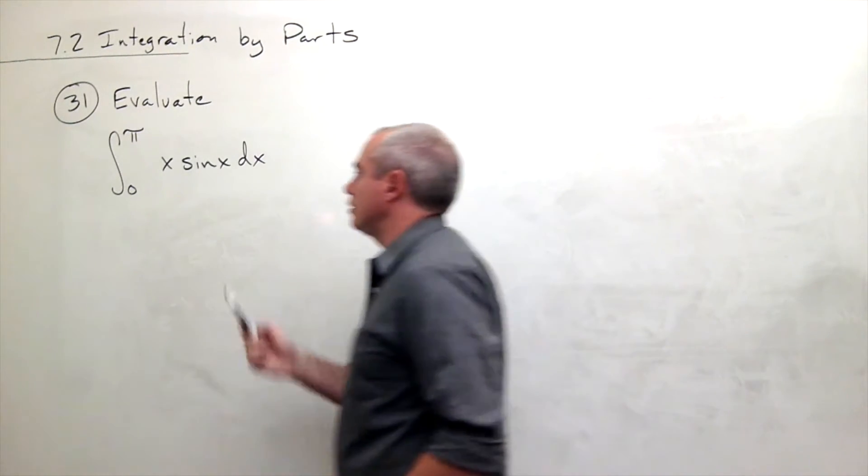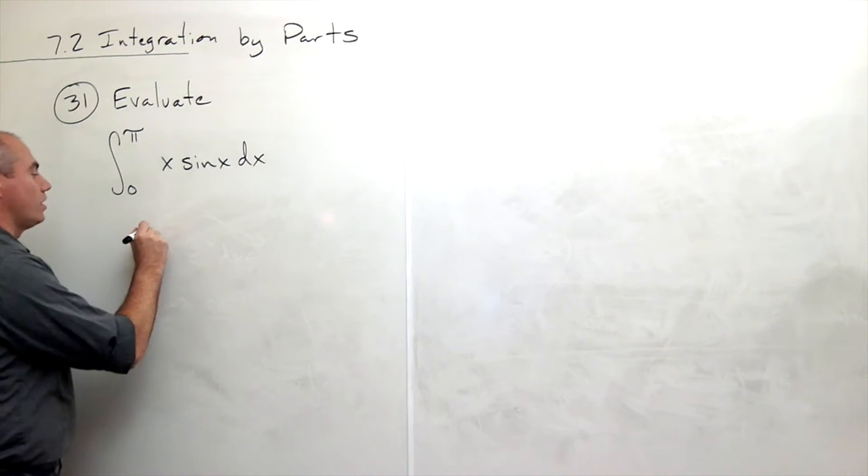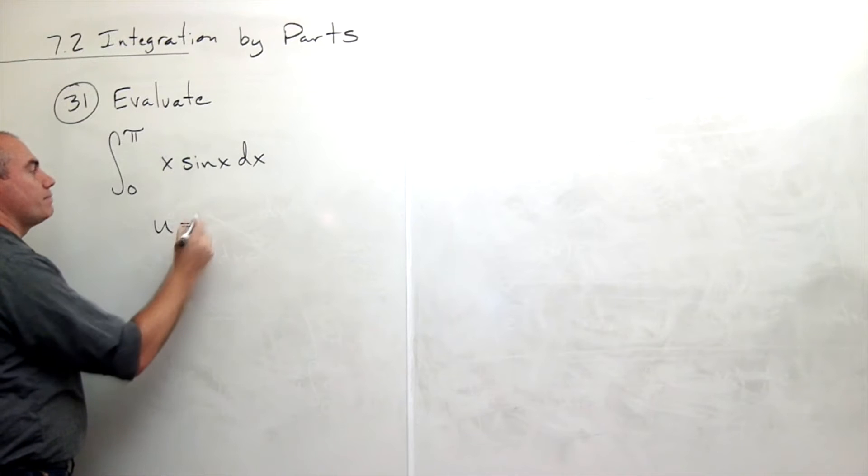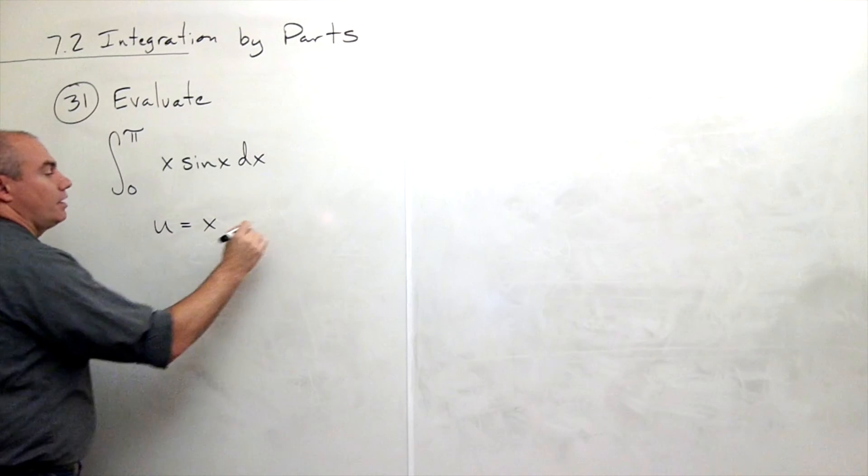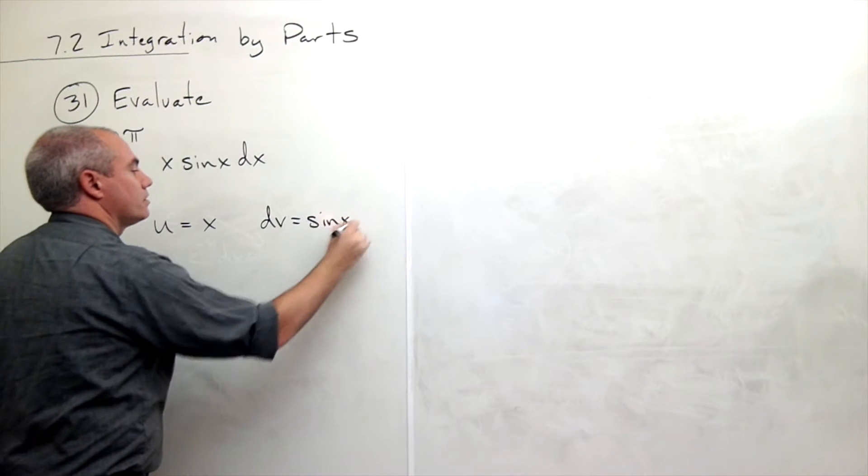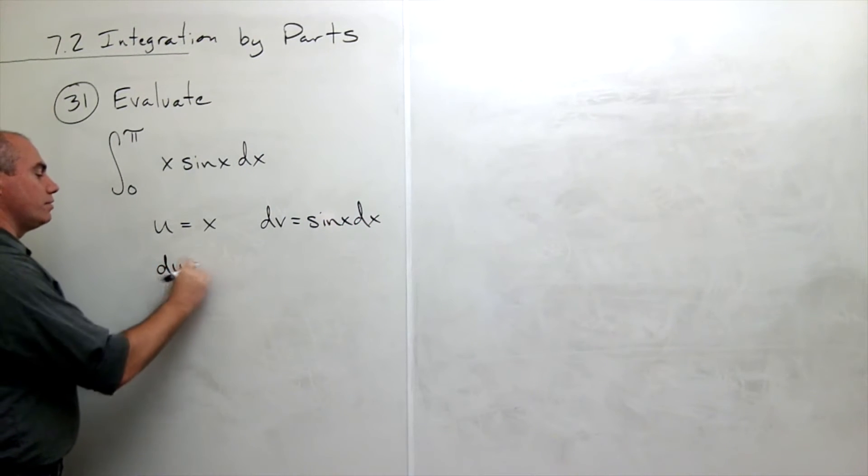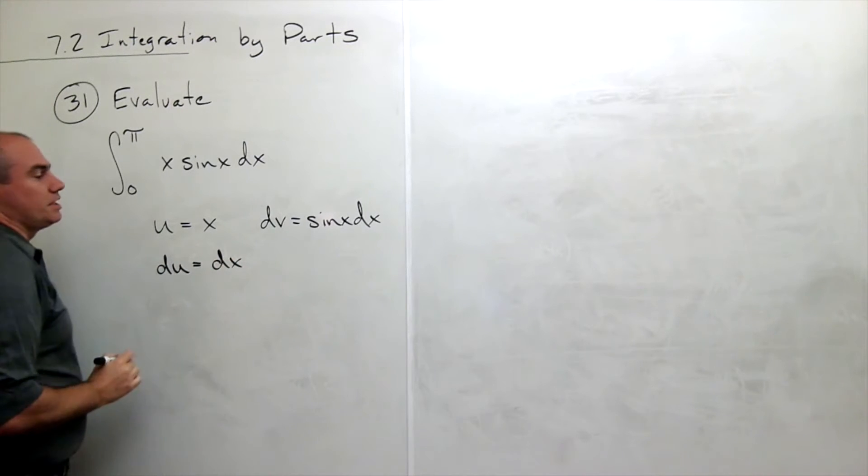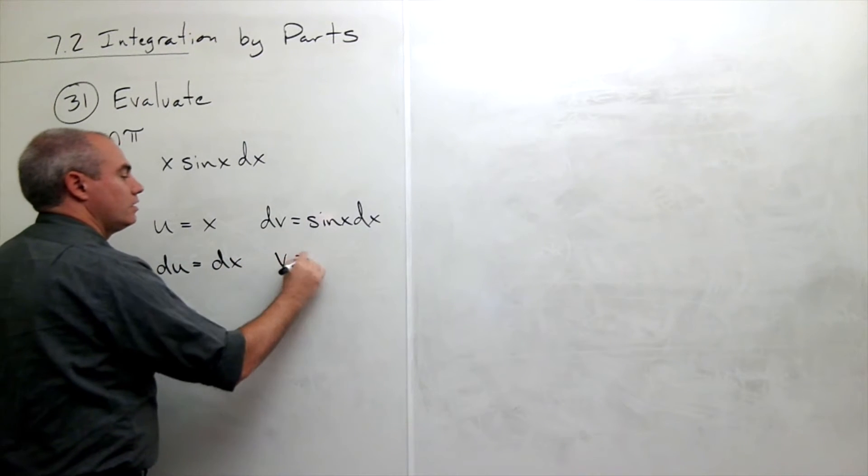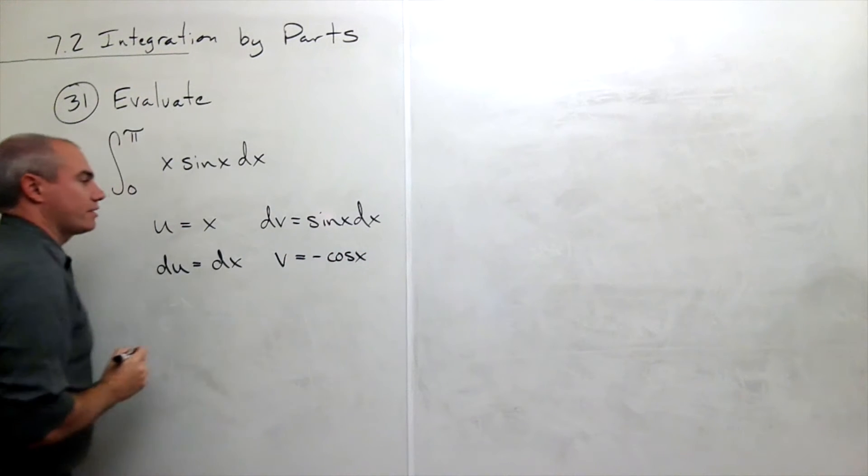So let's break this up using our u and dv. I'm going to let u in this case be my x and my dv be my sin x dx. Then du is dx and v is equal to negative cosine of x.